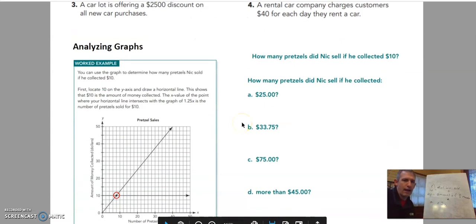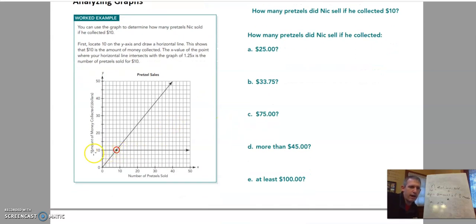Now, analyzing graphs. You can use the graph to determine how many pretzels Nick sold if he collected $10. So we can go here and we can find the $10 under the amount of money collected. Just read the headings and you'll know which number line you're looking at. We're looking at the Y number line or the Y axis. So $10 is where we're looking. We go over here until we hit our graphed line and then I need to go straight down. And what number would that be right there?